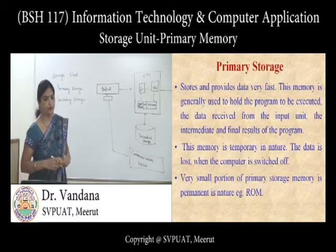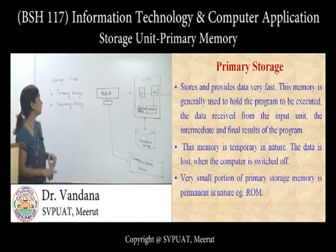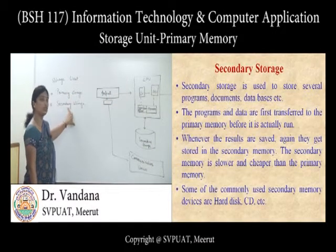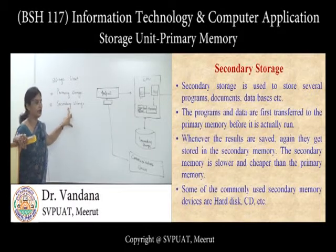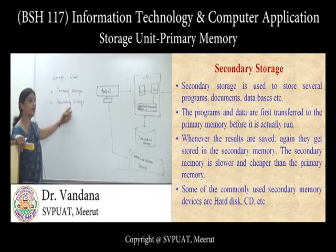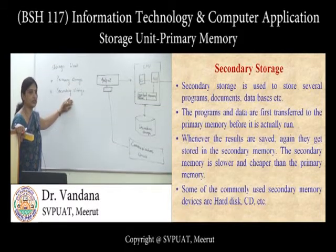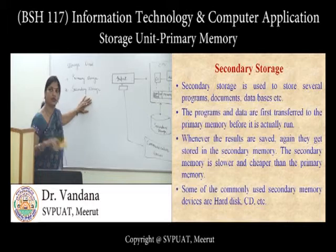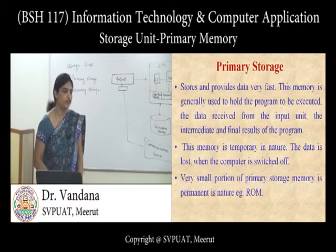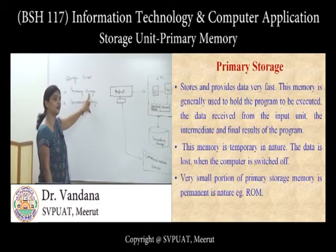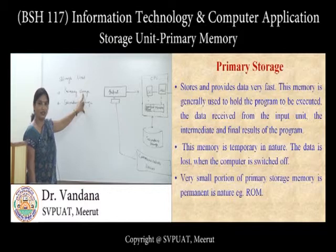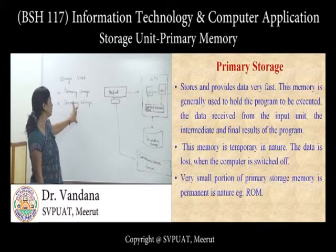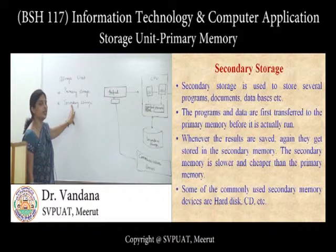The type of memory directly used by the CPU is primary storage, while secondary storage holds data permanently — for backup or later use. Examples include pen drives, hard disks, and CDs. The basic difference between these two types is that primary memory retains data only while power is on or until new data replaces it, whereas secondary storage retains data even after power is switched off.